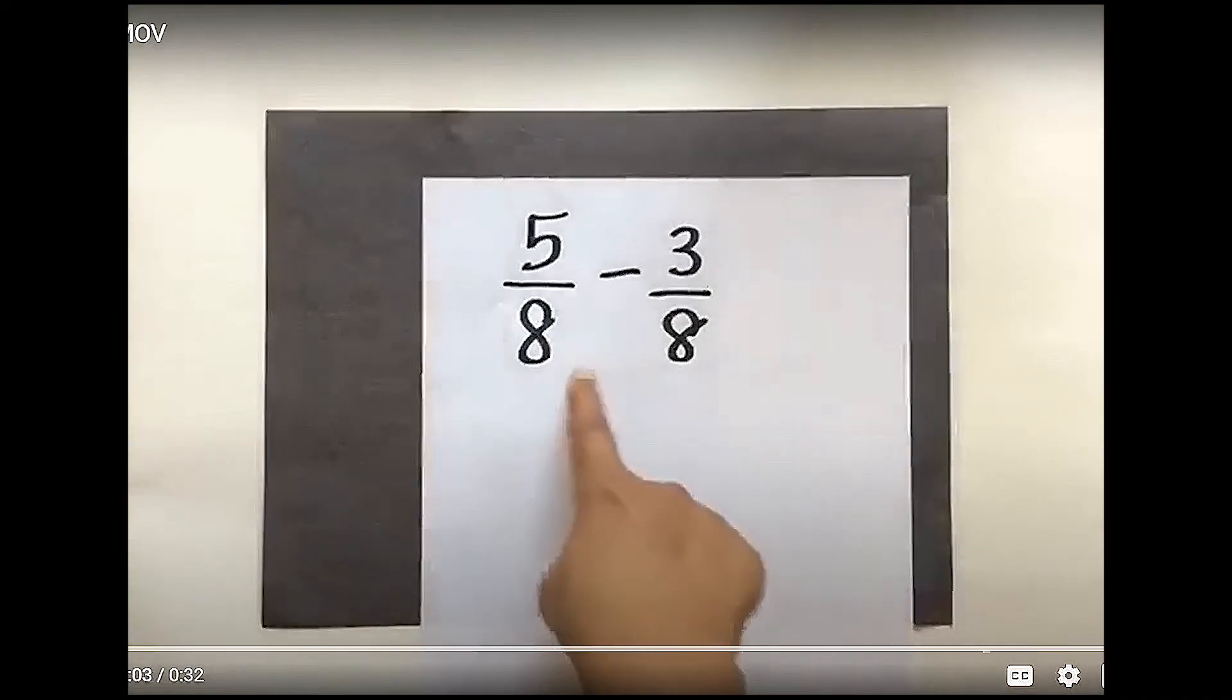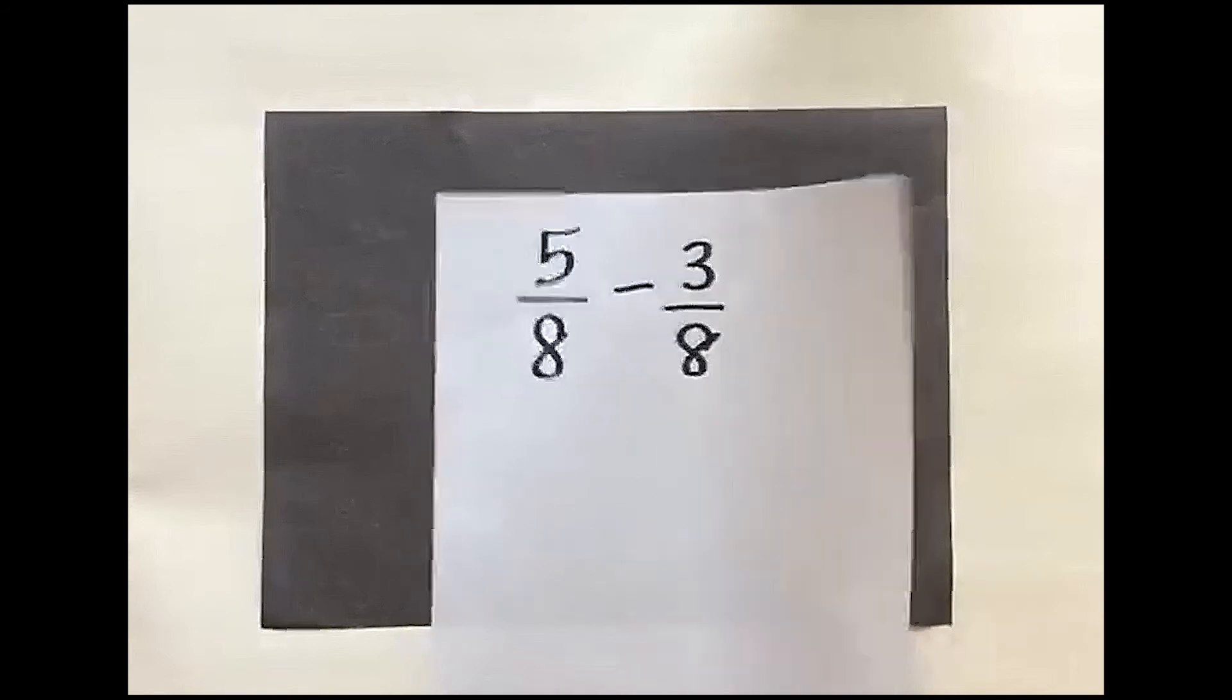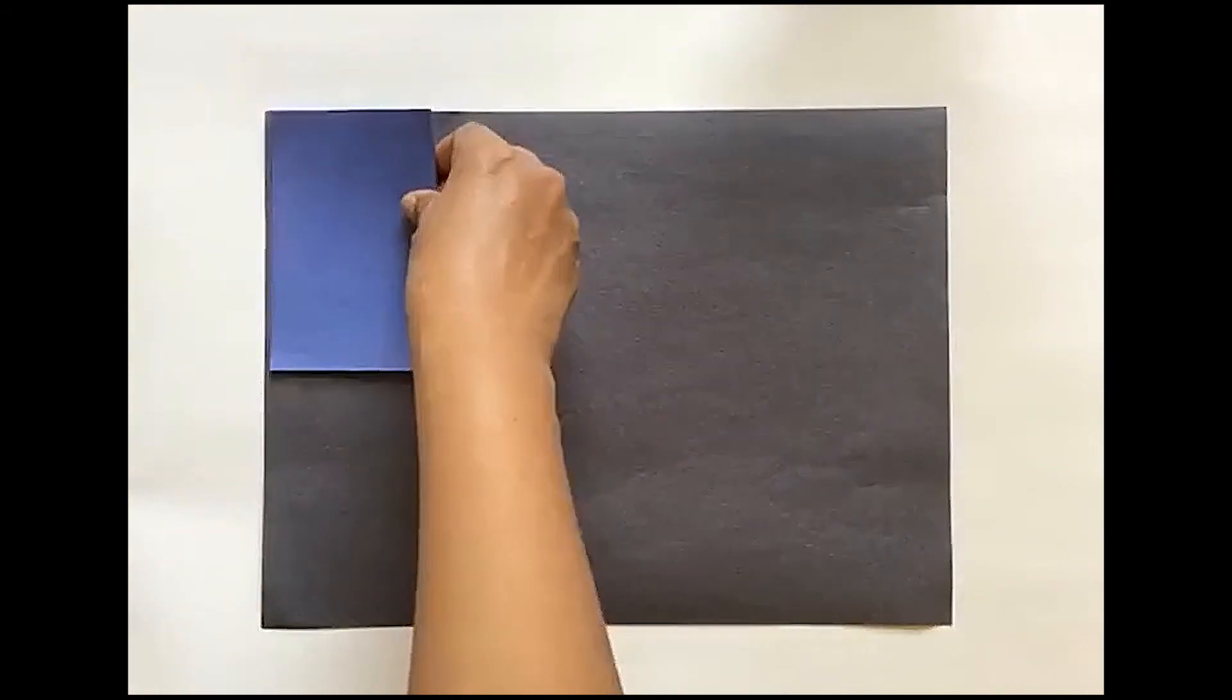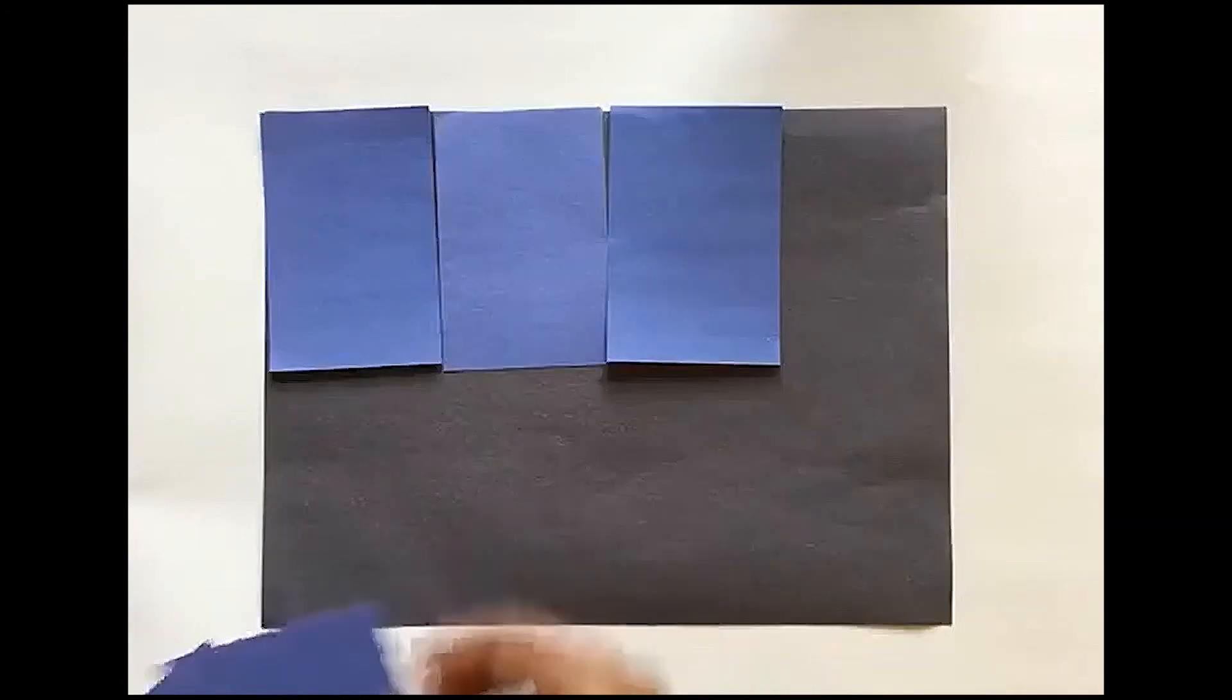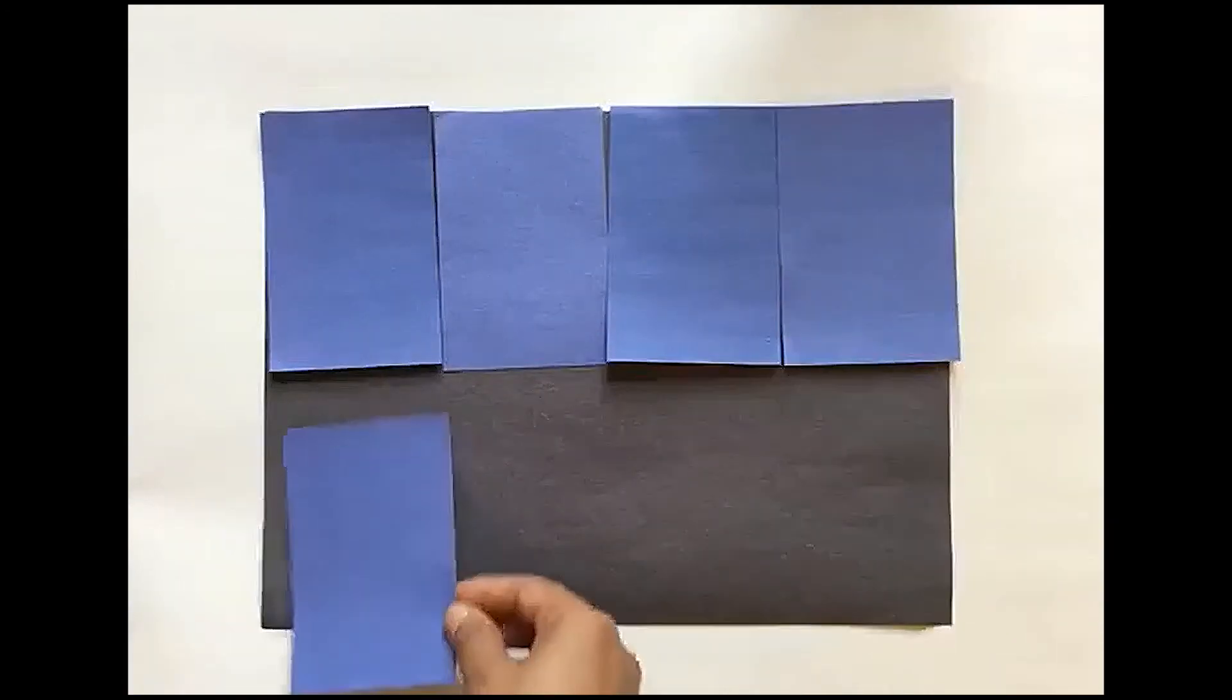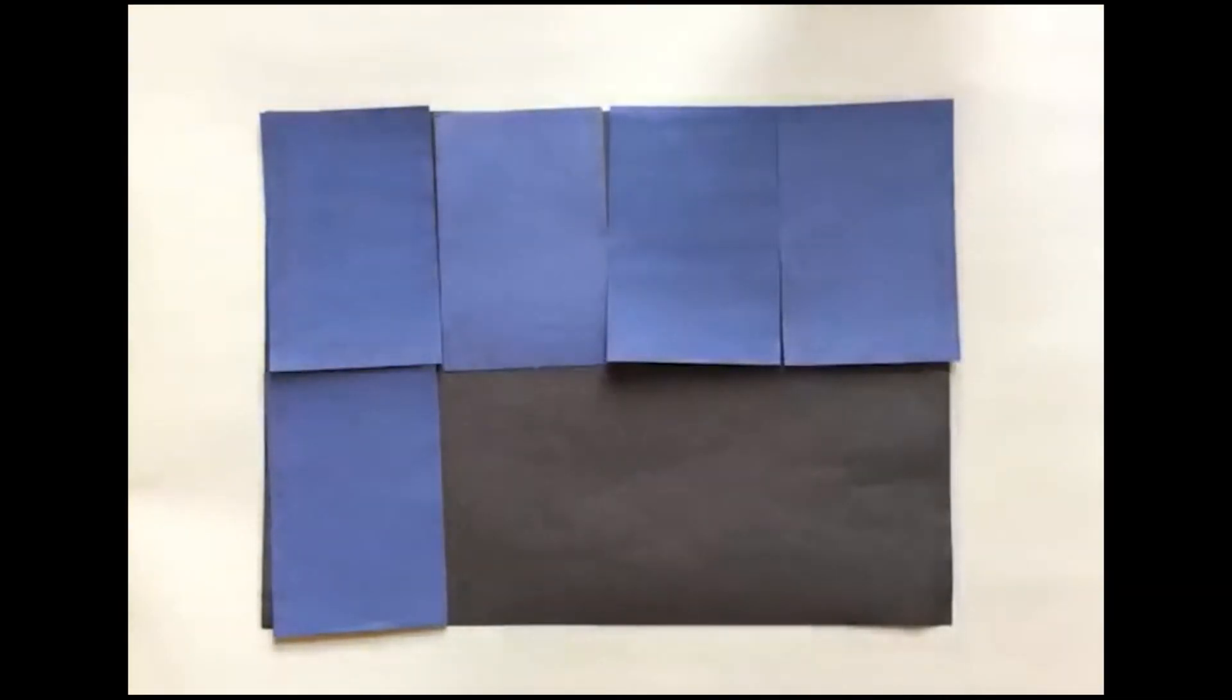Let's begin with subtracting 5/8 minus 3/8 and begin with 5/8. Using our blue construction papers to set up the 5/8. So let's do 1/8, 2/8, 3/8, 4/8, and 5/8. As you can see, my 5/8 is the blue. I need to remove 3/8.